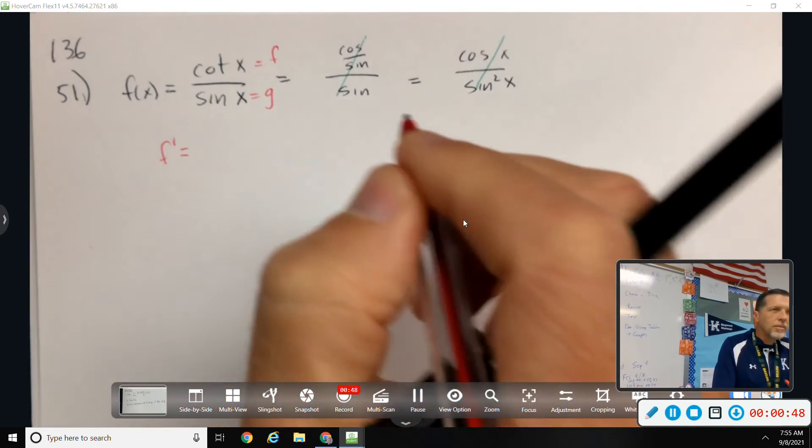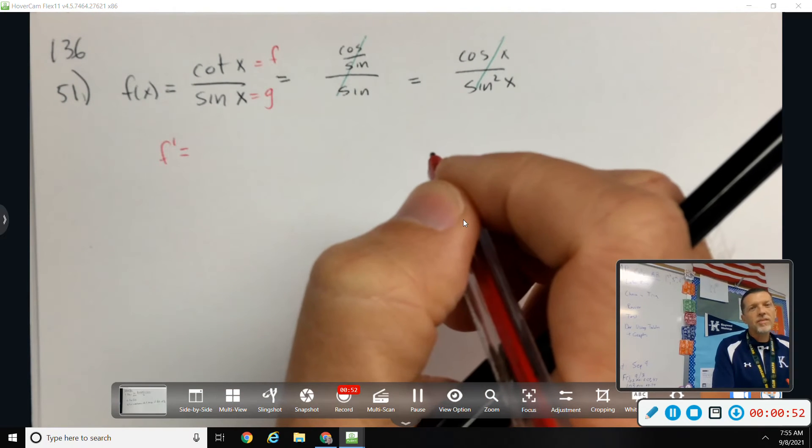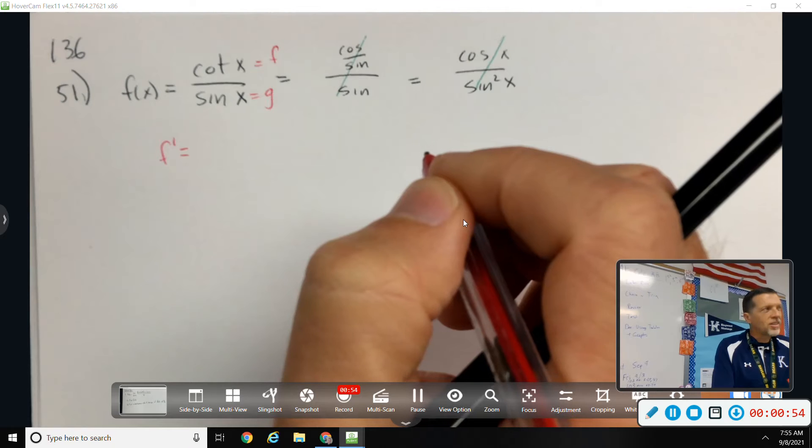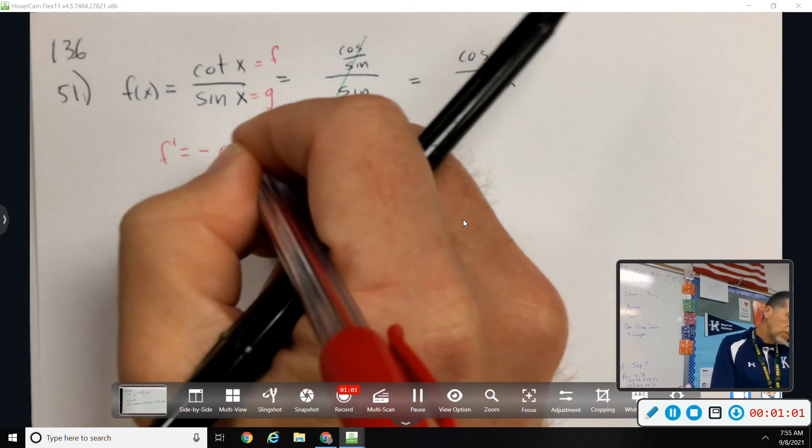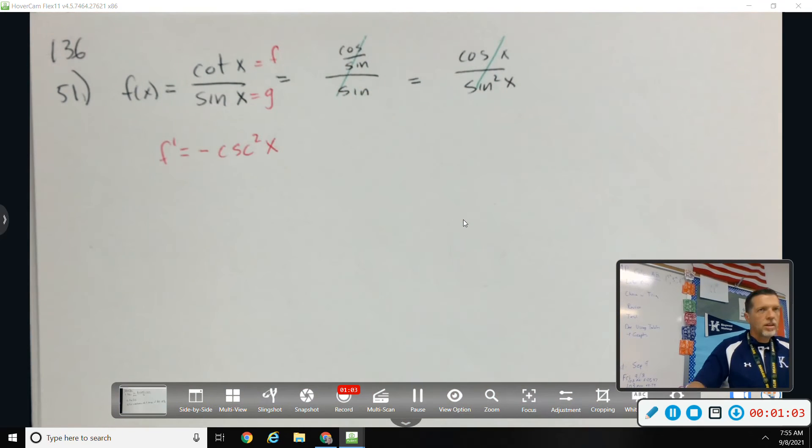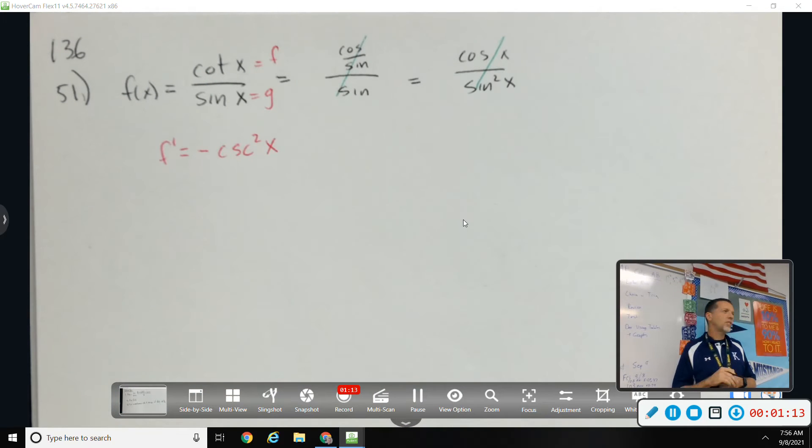So F prime, cotangent. Even I don't have cotangent memorized. I have tangent memorized. Tangent is secant squared, right? The derivative of tangent is secant squared. So the derivative of cotangent is negative cosecant squared. And that's honestly how you should memorize it and think about it. We don't use cotangent very often, so don't memorize cotangent and cosecant. Know how to get from tangent and secant to cotangent and cosecant.